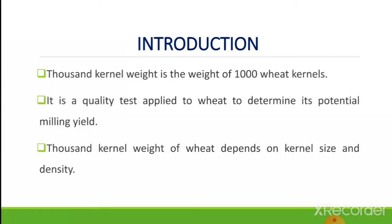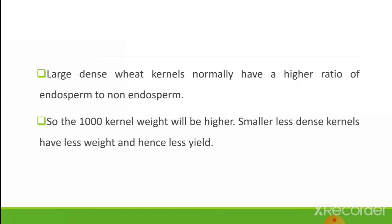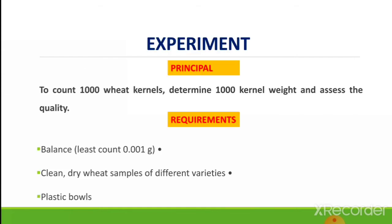Starting with the introduction: thousand kernel weight is the weight of 1000 wheat kernels or any grain under consideration. It is a quality test applied to wheat to determine its potential milling yield. Thousand kernel weight depends on kernel size and density. Large, dense wheat kernels normally have a higher ratio of endosperm to non-endosperm, so the 1000 kernel weight will be higher. Smaller, less dense kernels have less weight and hence less yield.